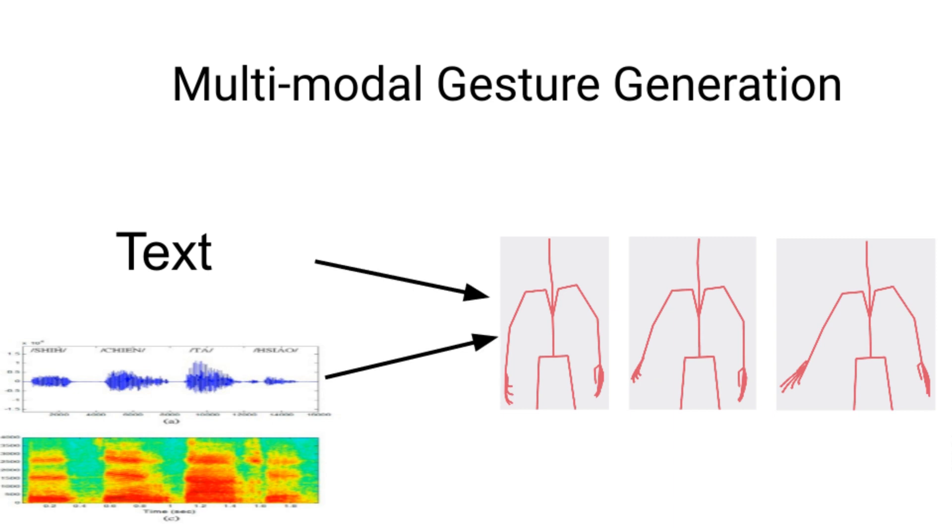our model takes both speech semantics and speech acoustics into account and produces body motion as a sequence of joint angle rotations. This makes it possible to generate arbitrary gestures, not only beat gestures that align with the rhythm of the speech, but also gestures that depend on semantic content.